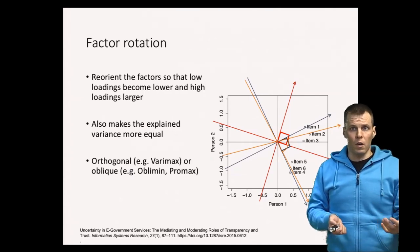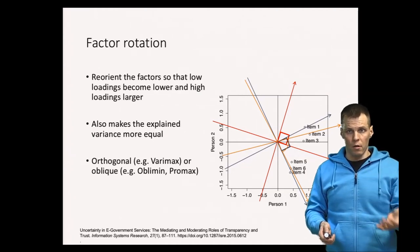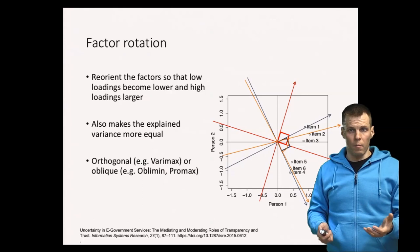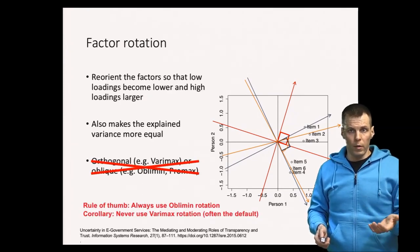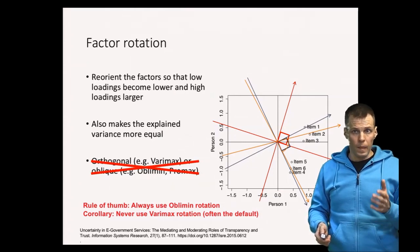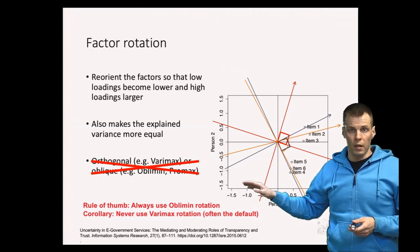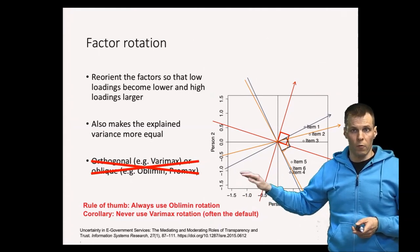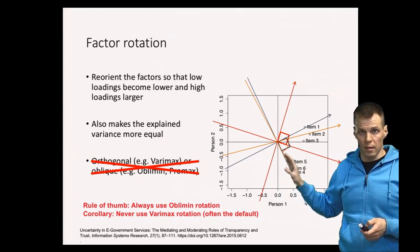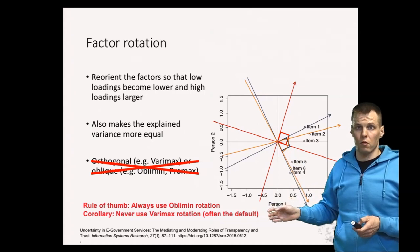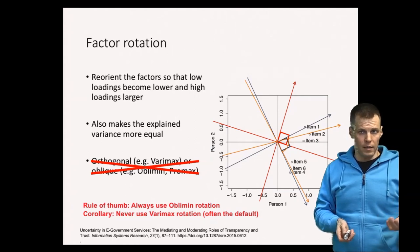So do you have to understand what exactly the factor rotation does? The answer is no because there is a simpler rule of thumb that you can apply. The rule of thumb is that always use oblimin rotation because it's theoretically the most appealing for many scenarios and particularly it is an oblique rotation. If your factors are supposed to represent constructs that are correlated, which is the case if we make a theory about those constructs, then constraining the factors to be uncorrelated doesn't make any sense.